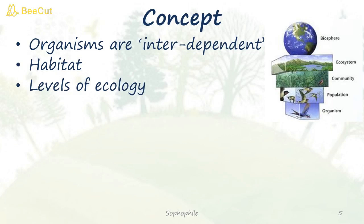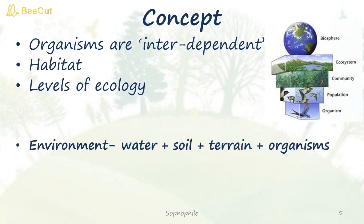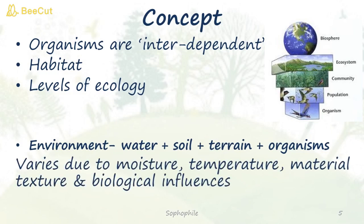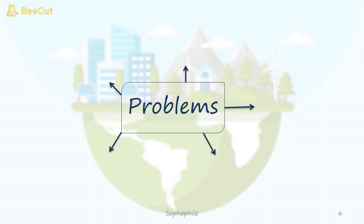Ecology is studied at different levels — it can be studied at the organism level or population level and so on. The environment in ecology consists of water, soil, terrain and organisms. This environment varies due to moisture, temperature, material, texture and biological influences.